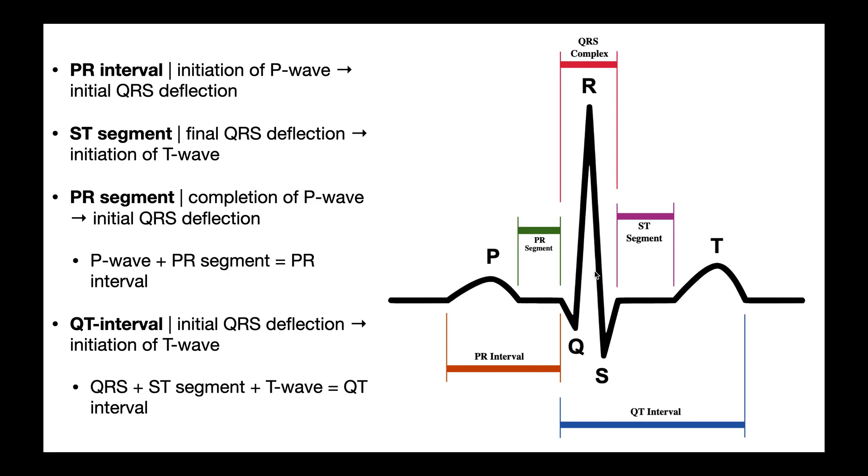Then we have this larger deflection. This whole thing right here is the QRS complex. Electrically speaking, it represents ventricular depolarization, and that leads to the mechanical event, ventricular systole.